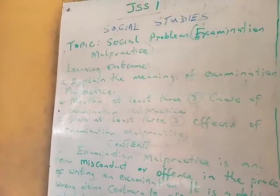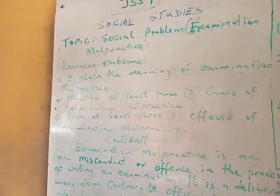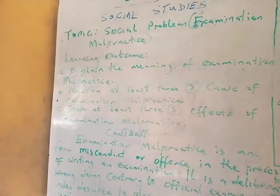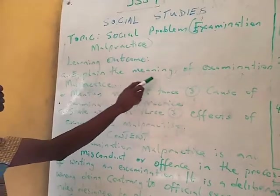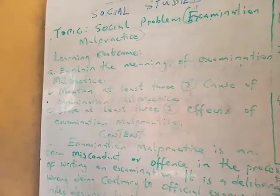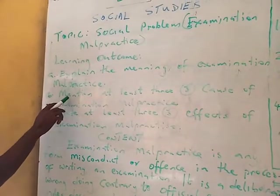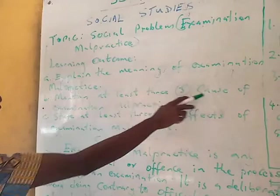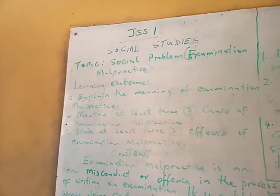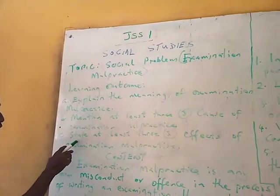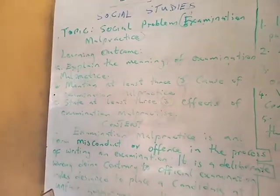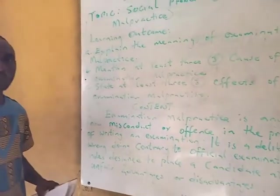Before we proceed, let us look at the learning outcomes. By the end of this lesson, it is expected that students should be able to: one, explain the meaning of examination malpractice; two, mention at least three causes of examination malpractice; three, state at least three effects of examination malpractice.